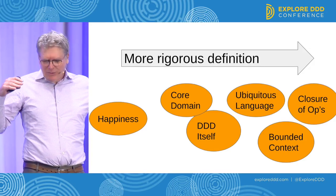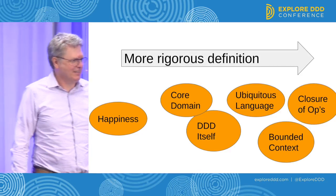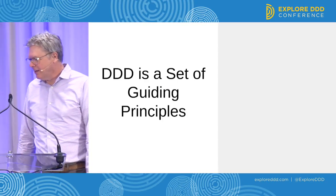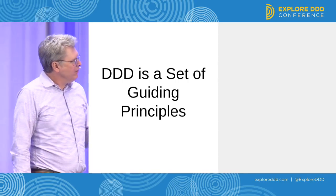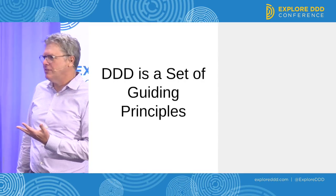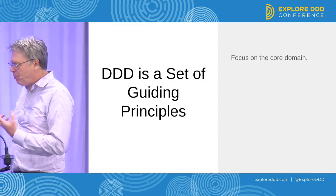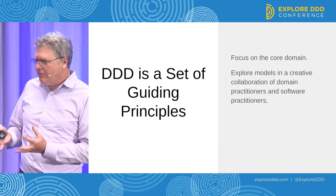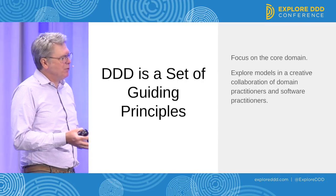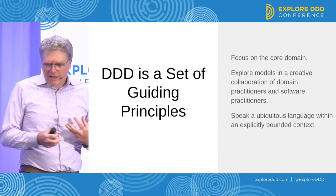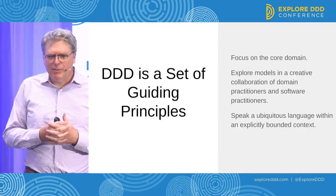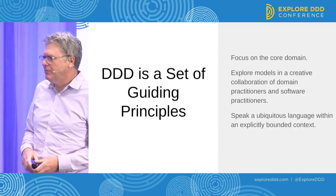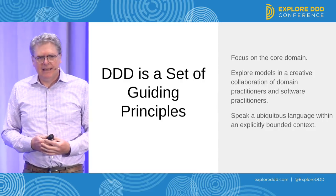DDD is somewhere between happiness and closure of operations in terms of how tightly defined it is. Here's how I've defined it for several years, and I think it works all right. It is a philosophy of design and a set of guiding principles. The primary principles are: focus on the core domain; explore models in a creative collaboration between software experts and domain experts; and speak a ubiquitous language within an explicitly bounded context. I think that definition is kind of in that sweet spot — not perfect, but workable, and it gives people a lot of room.